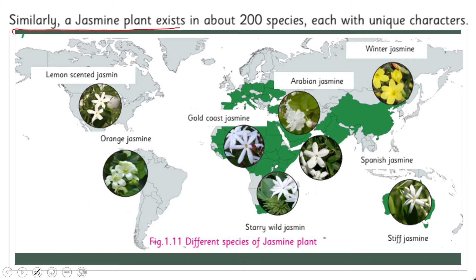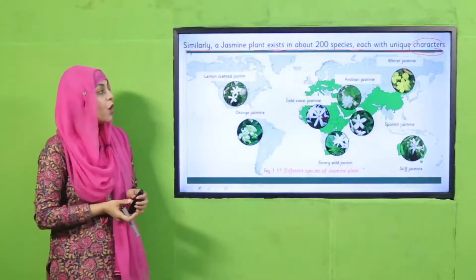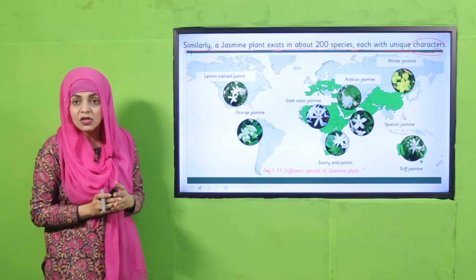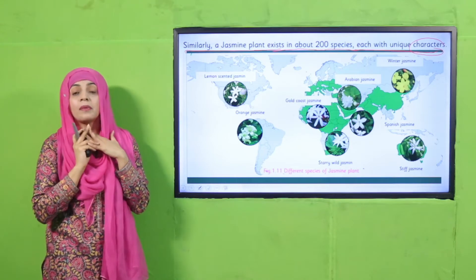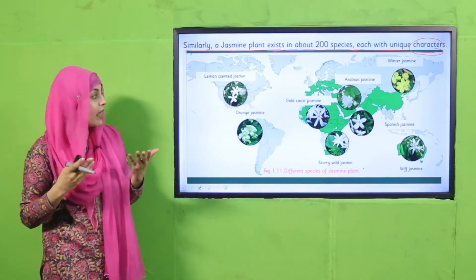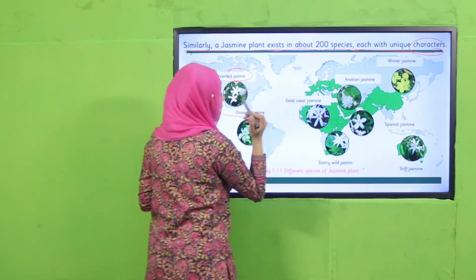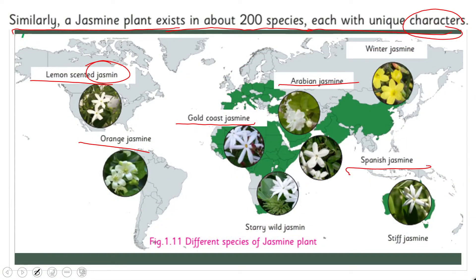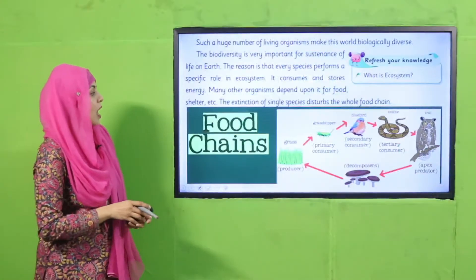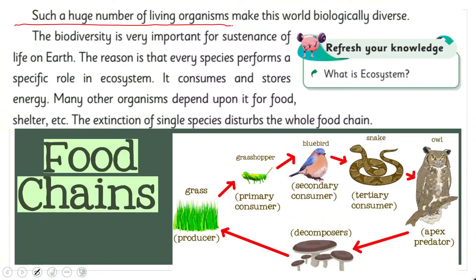Similarly, a jasmine plant exists in about 200 species, each with unique characteristics. Jasmine is Pakistan's national flower. The 200 species vary hugely in features, habits, behaviors, and even their flowers differ — lemon-scented jasmine, orange jasmine, gold coast jasmine, Arabian jasmine, Spanish jasmine, starry wild jasmine, and stiff jasmine.